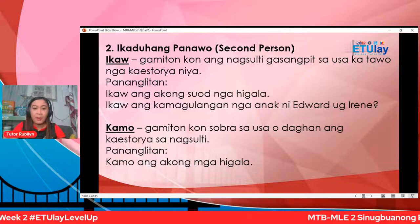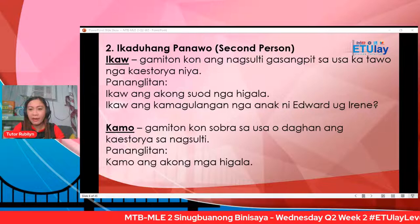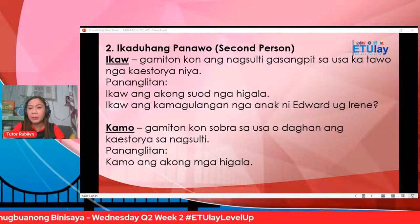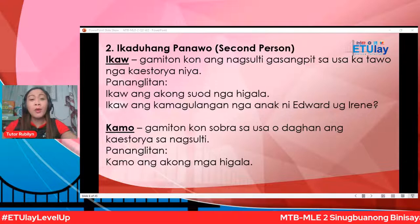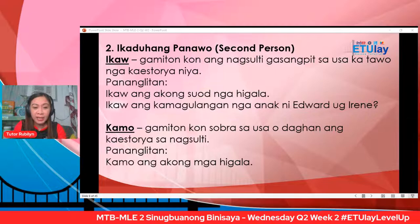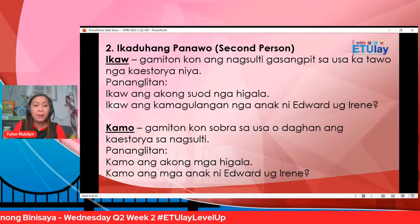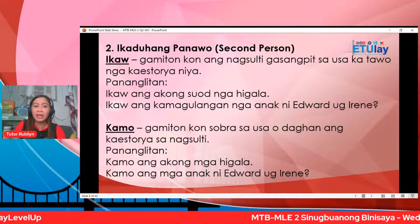For example, makikistorya ko kay Heavenly, kay Nilin, kay John, kay Presi, kay Prince, kay Isaac — kamo ang akong mga tinunan, kamo ang akong mga estudyante. Daghan mo nga akong gika-istorya. Pananglitan: kamo ang mga anak ni Edward o Irene. Humana ang unang panawo, ikaduhang panawo — ato na sa sunod.